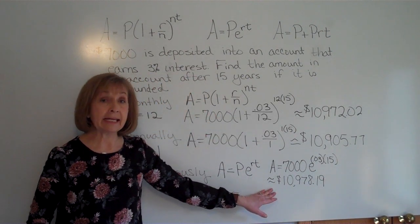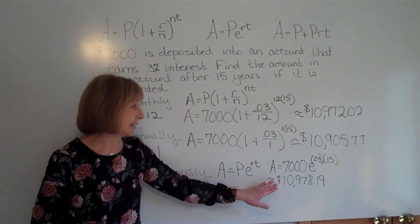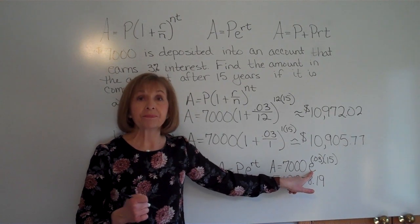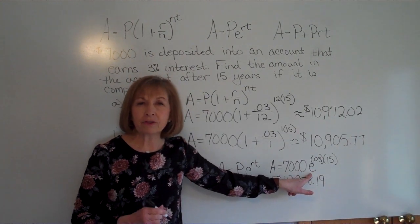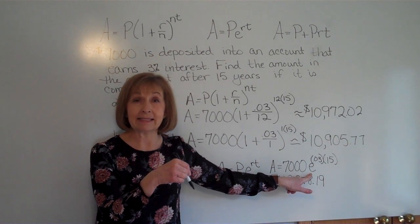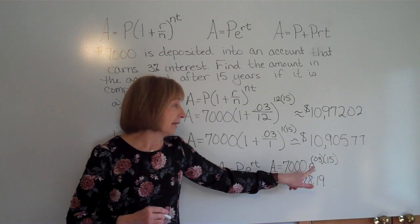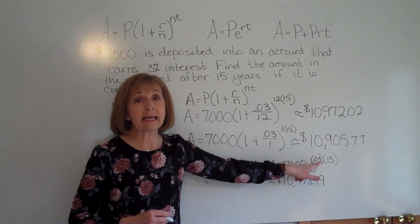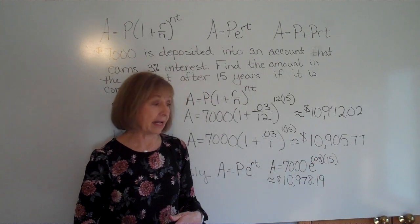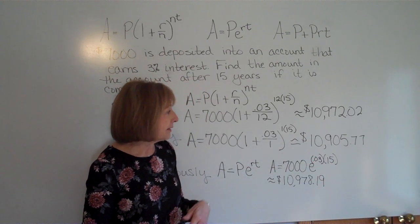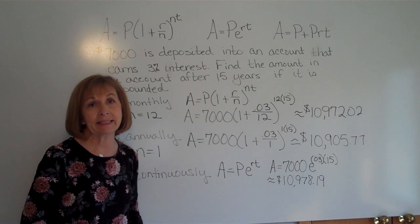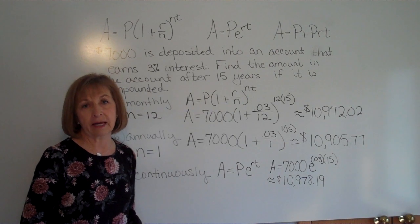Make sure you key those through to verify your values. To find the E key on your calculator, look for the LN key — E is usually the second function above it. If it doesn't enter as an exponent automatically, use the caret key and put the exponent in parentheses. These are examples of compound interest and one of the common applications when first working with exponential functions.